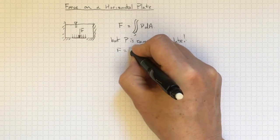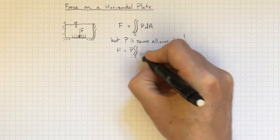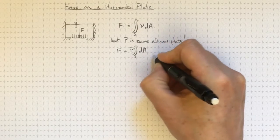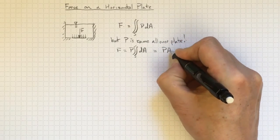We'll get F equal to p times the integral over the surface dA, which is just the surface area. And that'll be equal to pressure times area.